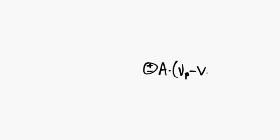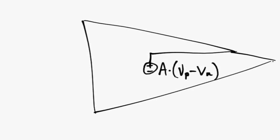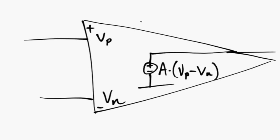We have VP minus VN times A as the output voltage, with VP here and VN here where this is the plus terminal and this is the negative terminal. So keep this model in mind when we move on to the next step.